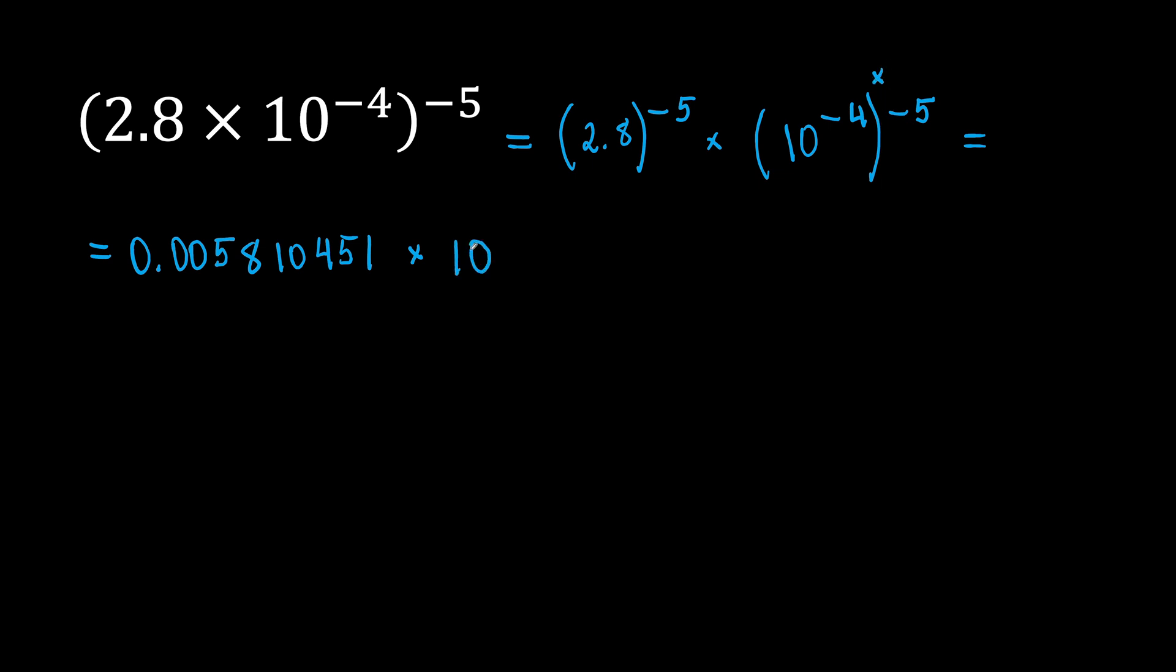Keep the same base, 10, and multiply the exponents. Negative 4 times negative 5 will be positive 20. Very good!